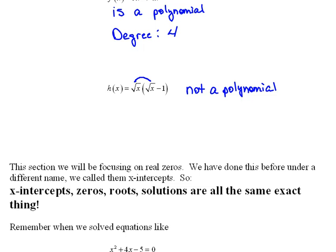Even if you were to distribute that radical out, then the square root of x times the square root of x would be x. And the square root of x times negative 1 would be minus the square root of x. Again, it's still not a polynomial because we still have that radical in there.